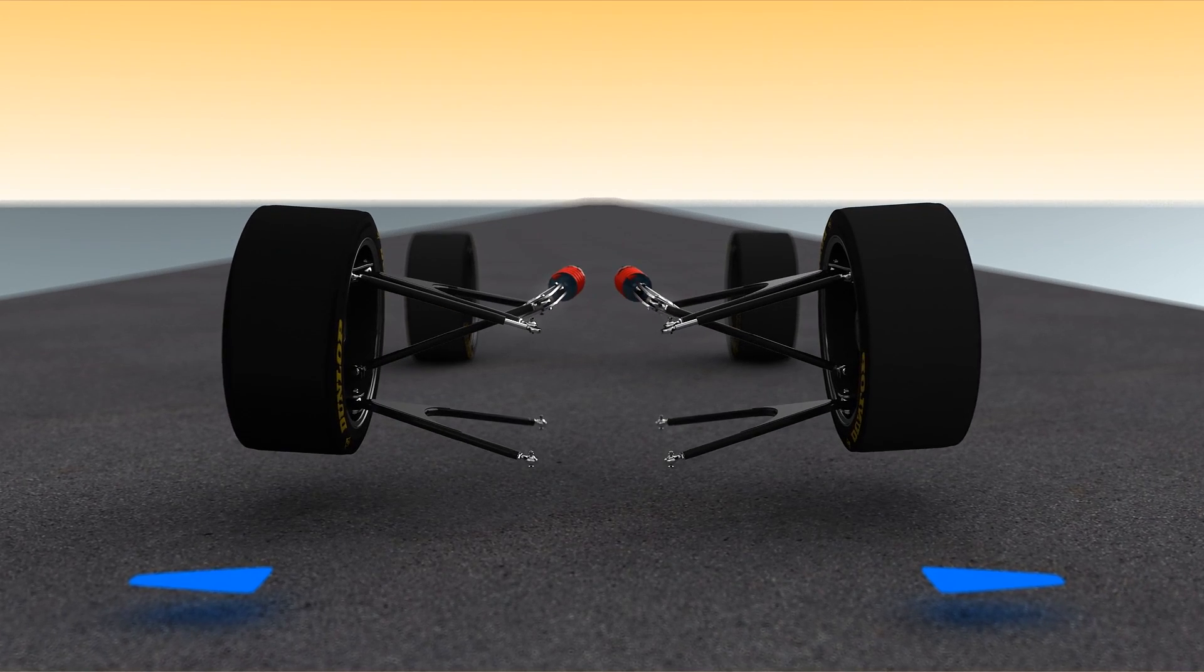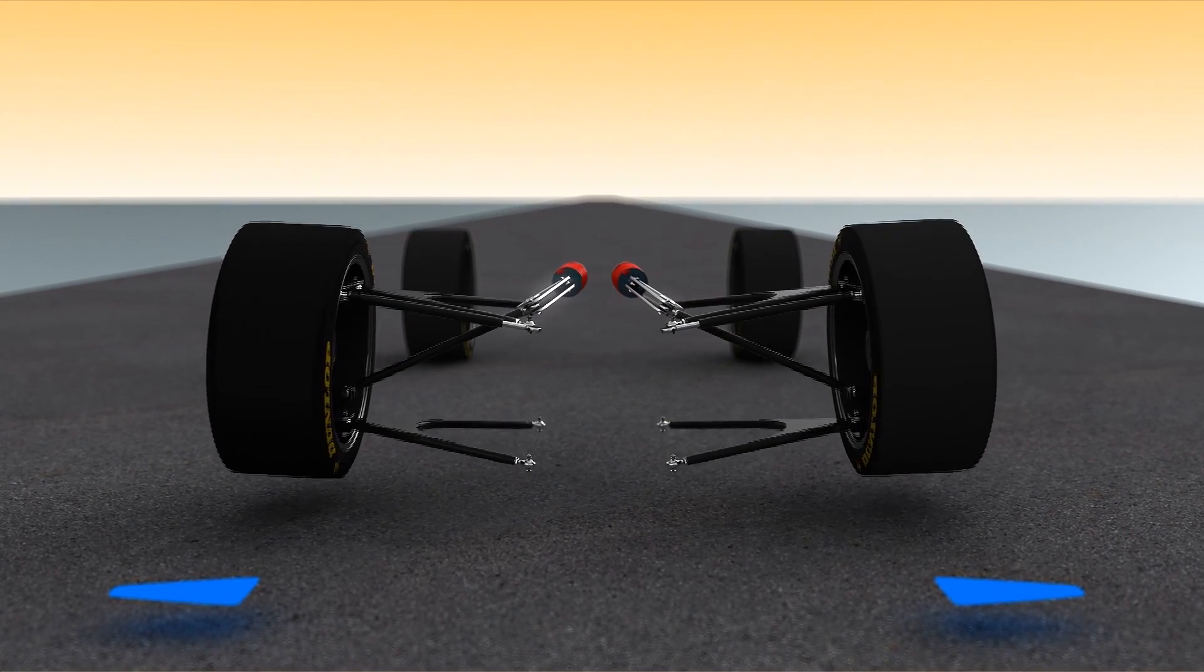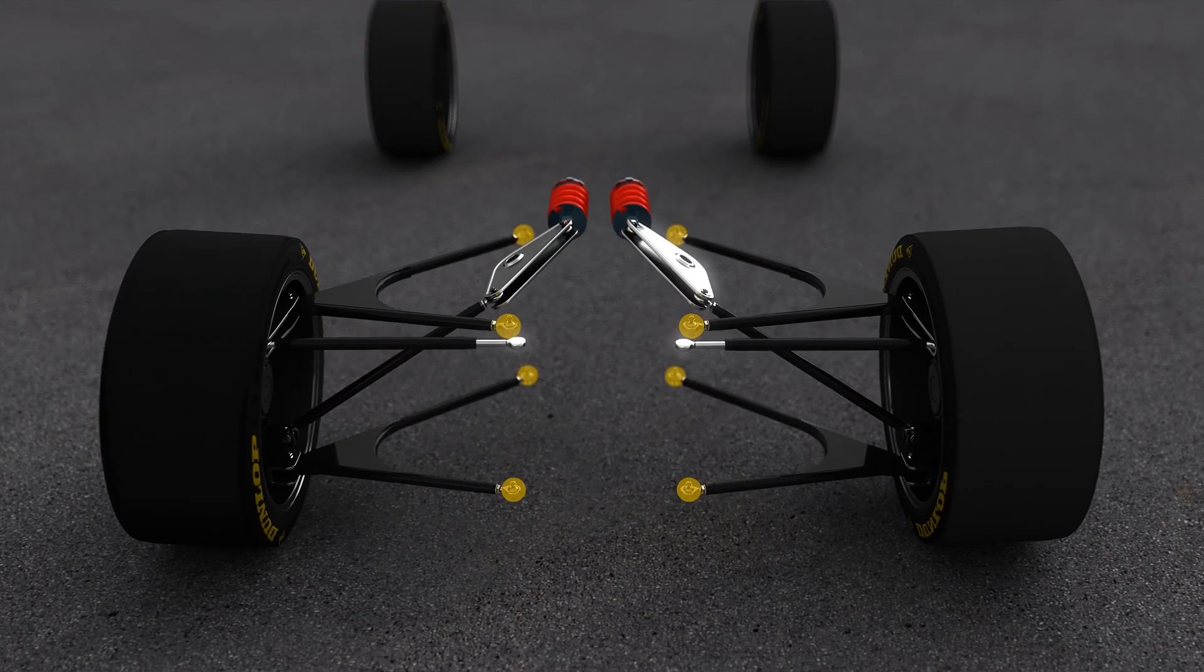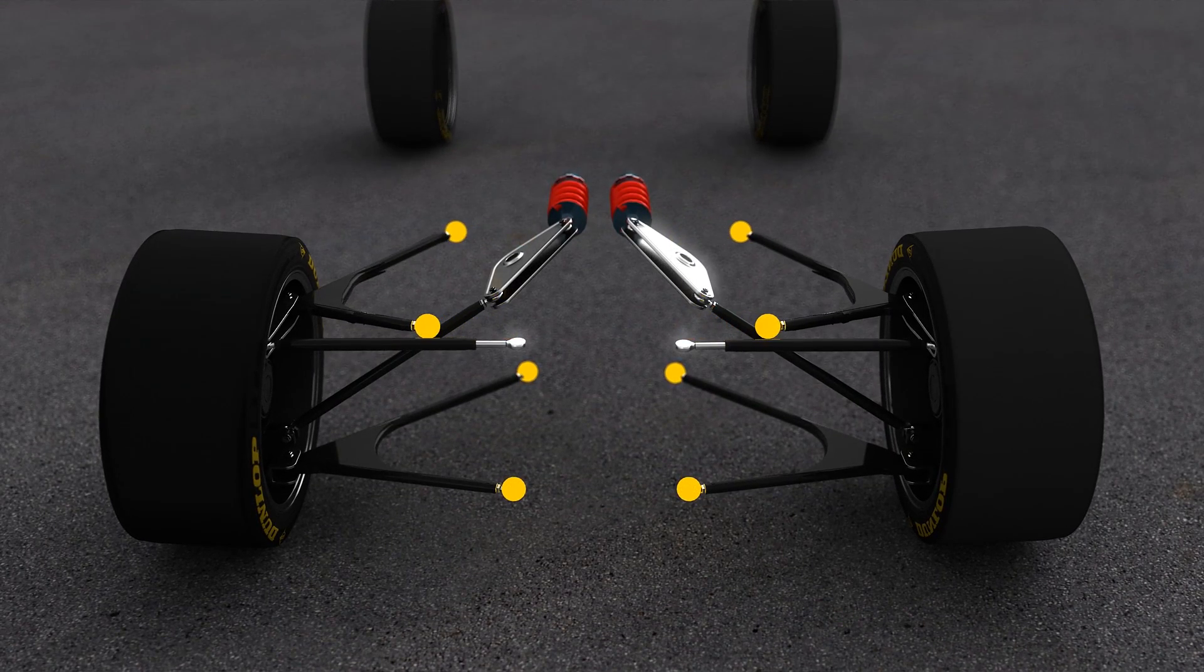To make the tires contact patch straight, the upper and lower wishbones are the same length, which however is not always advantageous.